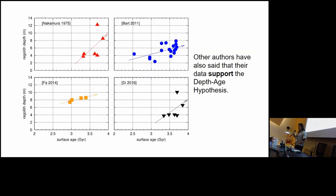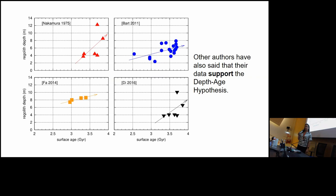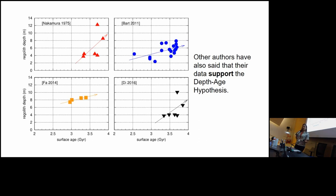Here are four papers spanning roughly 50 years. The Nakamura data in the upper left is seismic data from the Apollo seismic experiment. My 2011 work compared regolith depths on the near side versus the far side. The Fa et al. data studied four lava flows in Sinus Iridum, and another paper used topography to measure regolith depths. All of these stated that their data show increasing regolith depth with age.